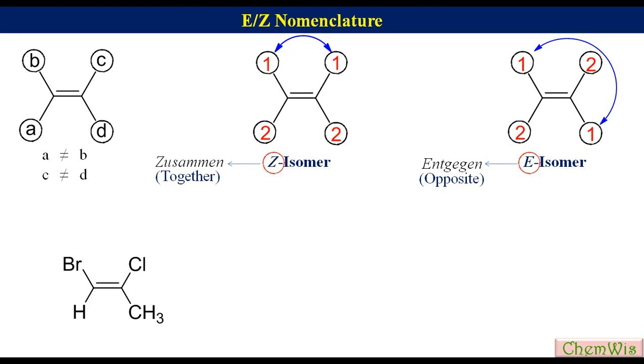On the left carbon there are H and Br. Based on the priority rules we discussed in the previous lecture, Br will be 1 and H will be 2. On the right carbon...